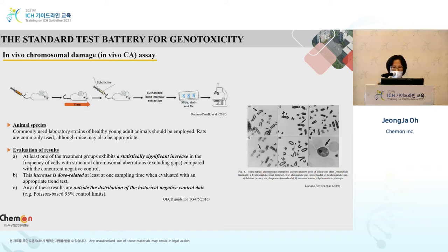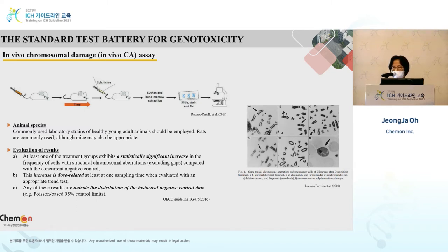Next, the in vivo chromosomal damage assay. In this assay, the test compound is given, and colchicine is used — the same method as described previously. Then we use a microscope. For in vitro and in vivo chromosome damage assays, the way we check and interpret the results are almost the same.